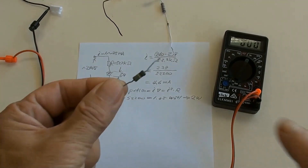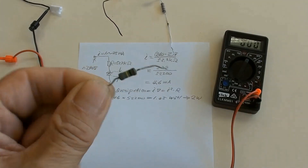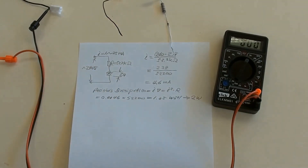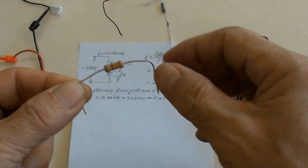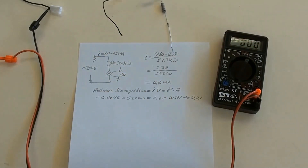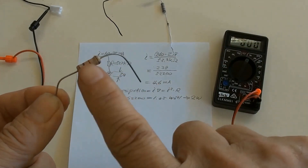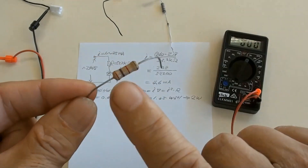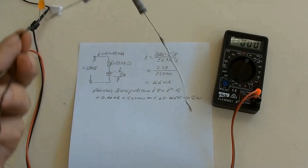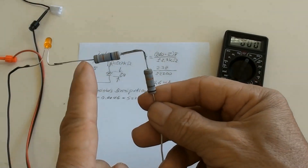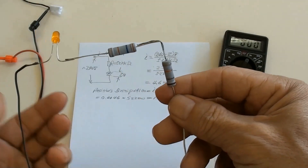As examples of resistor sizes: a resistor of this size is 0.5 watt, this one is 1 watt, that is a 2-watt resistor, and those are 3-watt resistors suitable for this circuit.